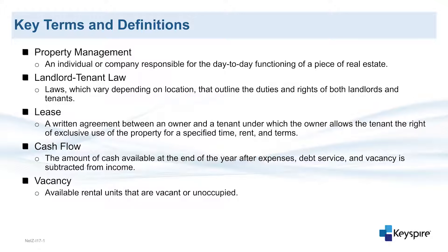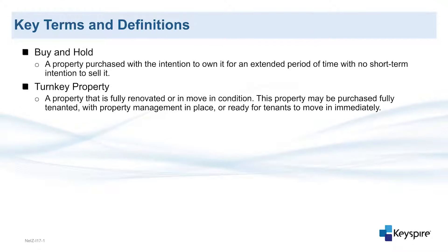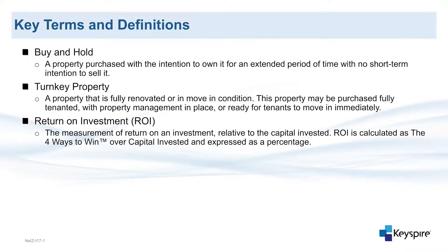Vacancy refers to available rental units that are vacant or unoccupied. Buy and hold is a property purchased with the intention to own it for an extended period of time with no short-term intention to sell. A turnkey property is a property that is fully renovated or in move-in condition — it may be purchased fully tenanted with property management in place or ready for tenants to move in immediately. Return on investment, or ROI, is the measurement of return on an investment relative to the capital invested, calculated as the four ways to win over capital invested and expressed as a percentage.